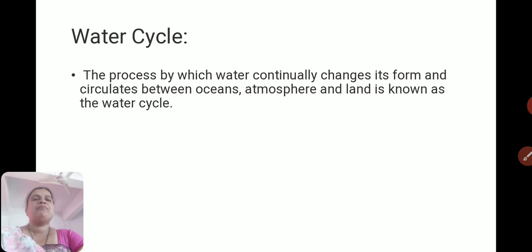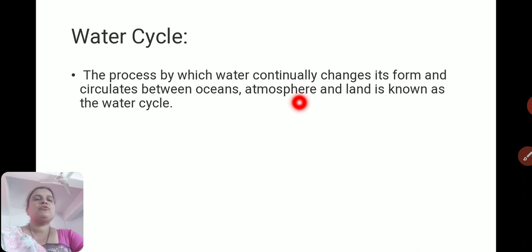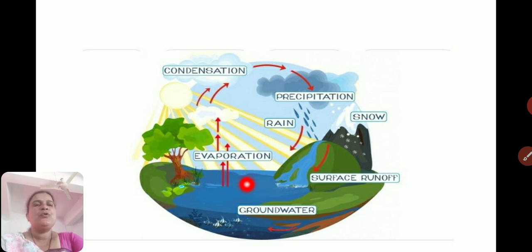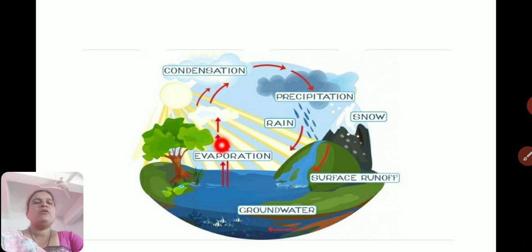Water cycle. The process by which water continuously changes its form and circulates between oceans, atmosphere, and land is known as the water cycle. With the help of this diagram, we will see: here you can see collected groundwater. This groundwater, due to the sun's heat, gets evaporated. Then this water converts into steam.